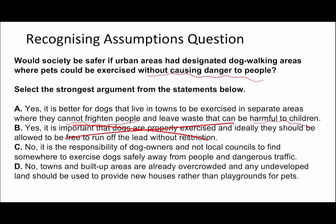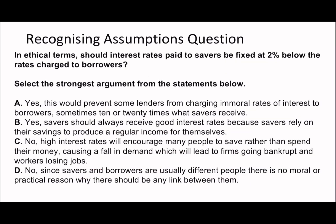Option C says it's the responsibility of dog owners, not local councils, to find somewhere to exercise dogs safely away from people and dangerous traffic — but this focuses on who should provide designated areas rather than whether there should be a different place at all, so it doesn't address the main idea. Option D says towns are already overcrowded and undeveloped land should be used for new houses rather than playgrounds for pets — nothing about reducing danger, and it narrows the focus to housing. So A is the only one that really makes sense.